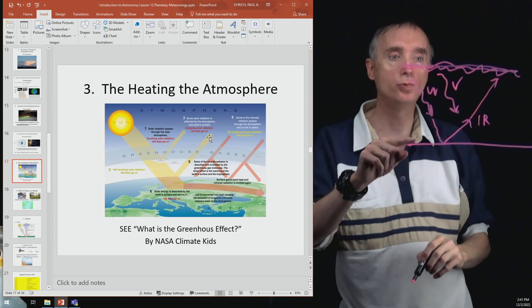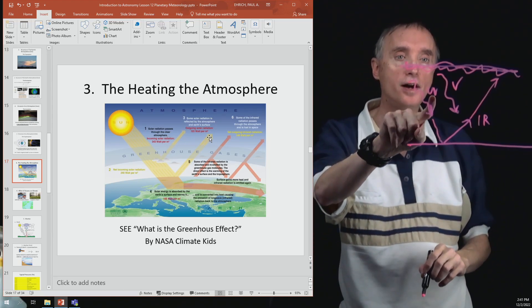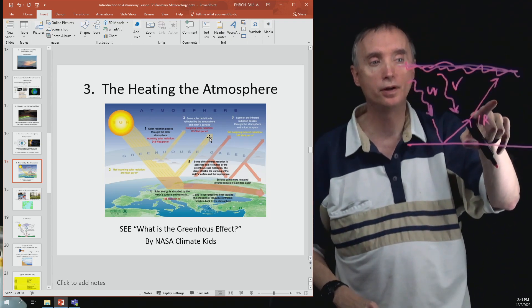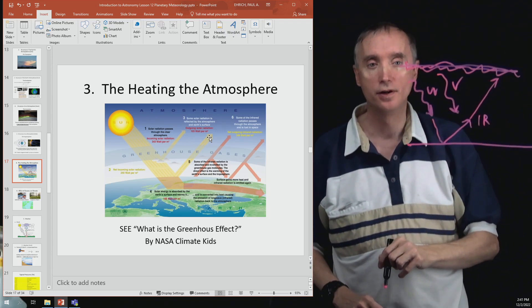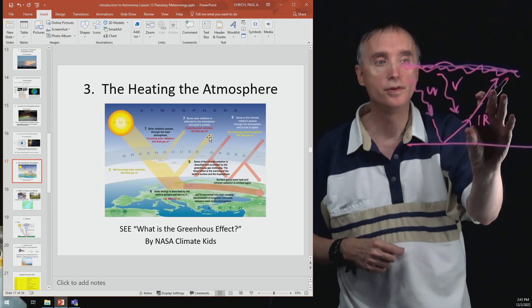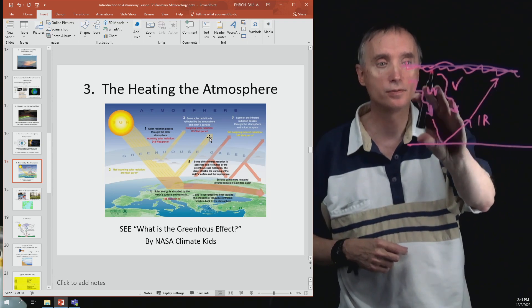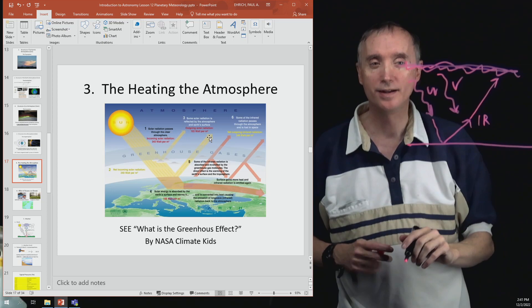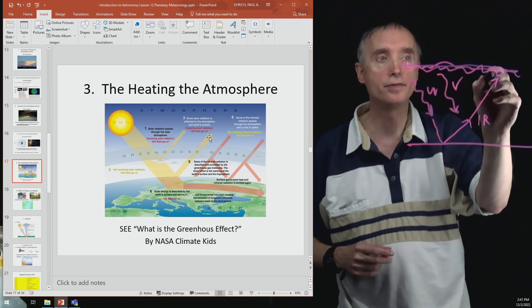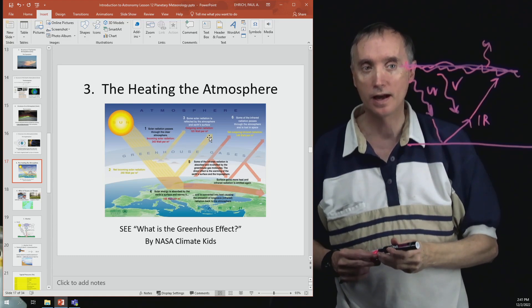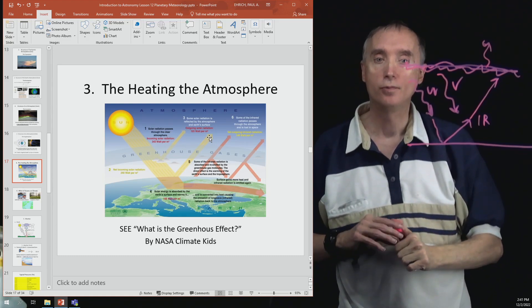The clouds would allow ultraviolet and visible light to get out, but it wouldn't allow infrared. So as more and more of this light is coming in, then this infrared starts to build up and the planet begins to warm up.